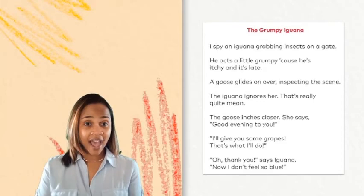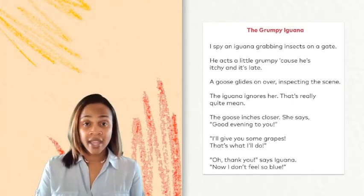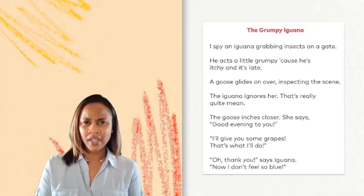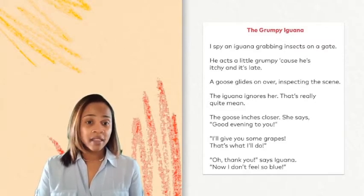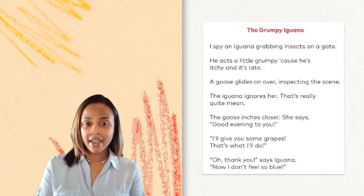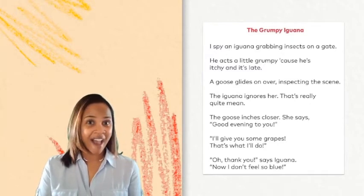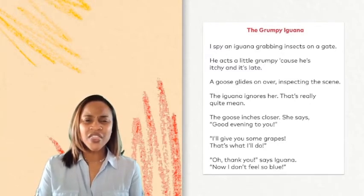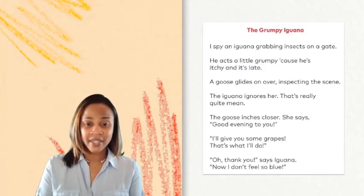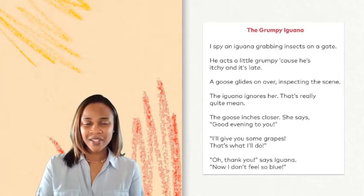A goose glides on over inspecting the scene. The iguana ignores her. That's really quite mean. The goose inches closer. She says, good evening to you. I'll give you some grapes. That's what I'll do. Oh, thank you, says Iguana. Now I don't feel so blue.